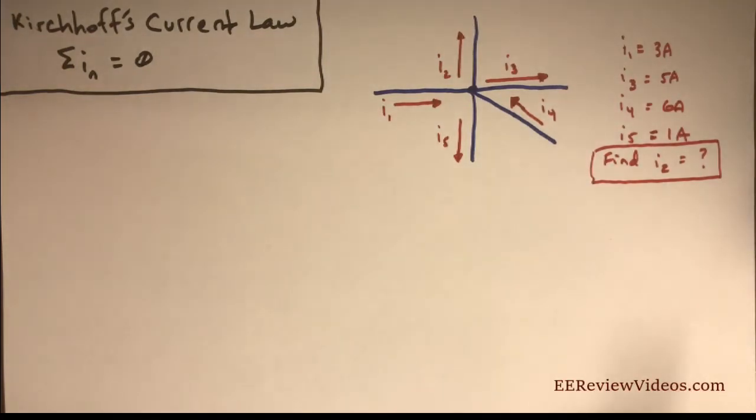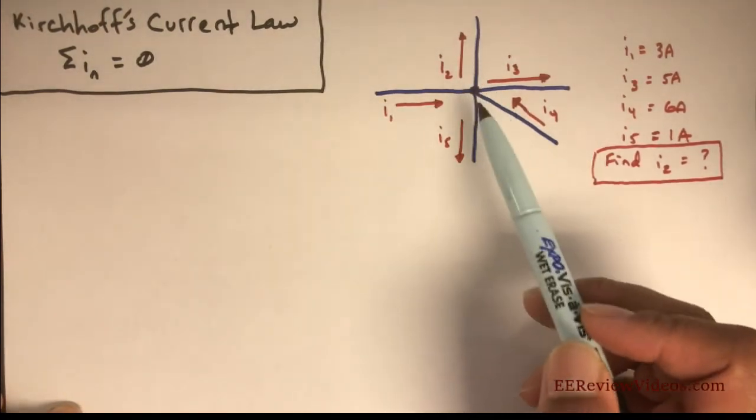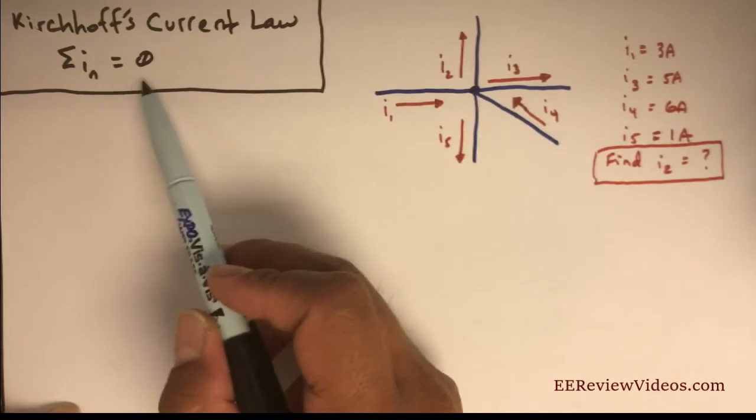Hey everyone, I thought we'd do a Kirchhoff's Current Law practice problem. As a reminder, when we're talking about Kirchhoff's Current Law, the idea is that when we take a look at a node, the sum of all the currents passing through this node should equal zero.